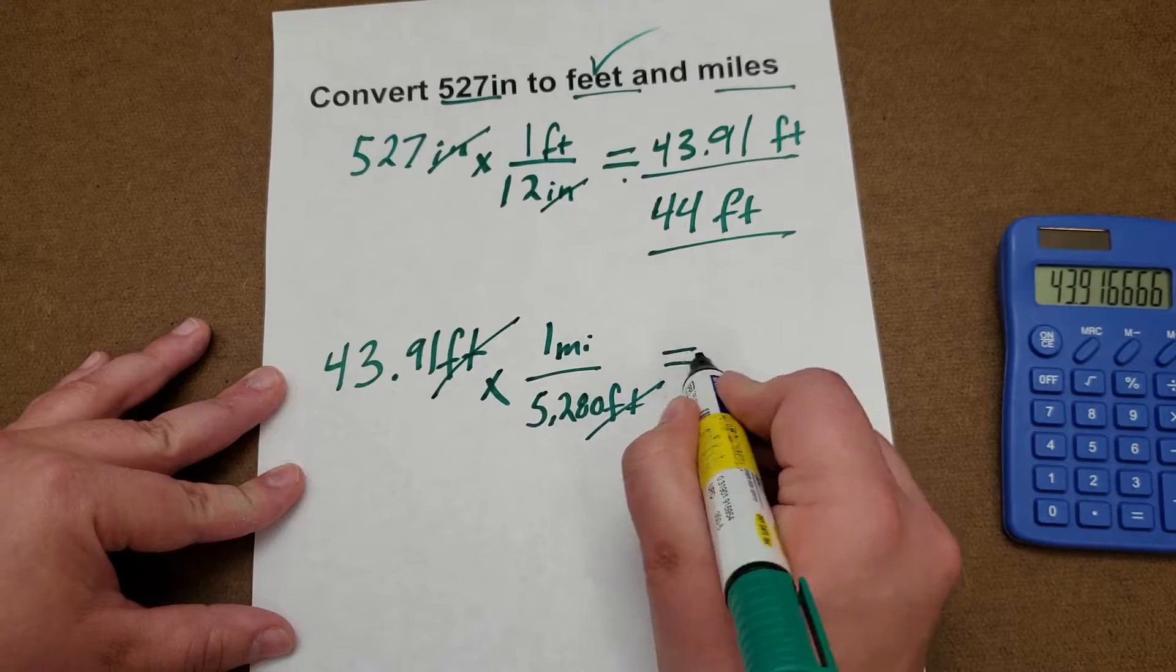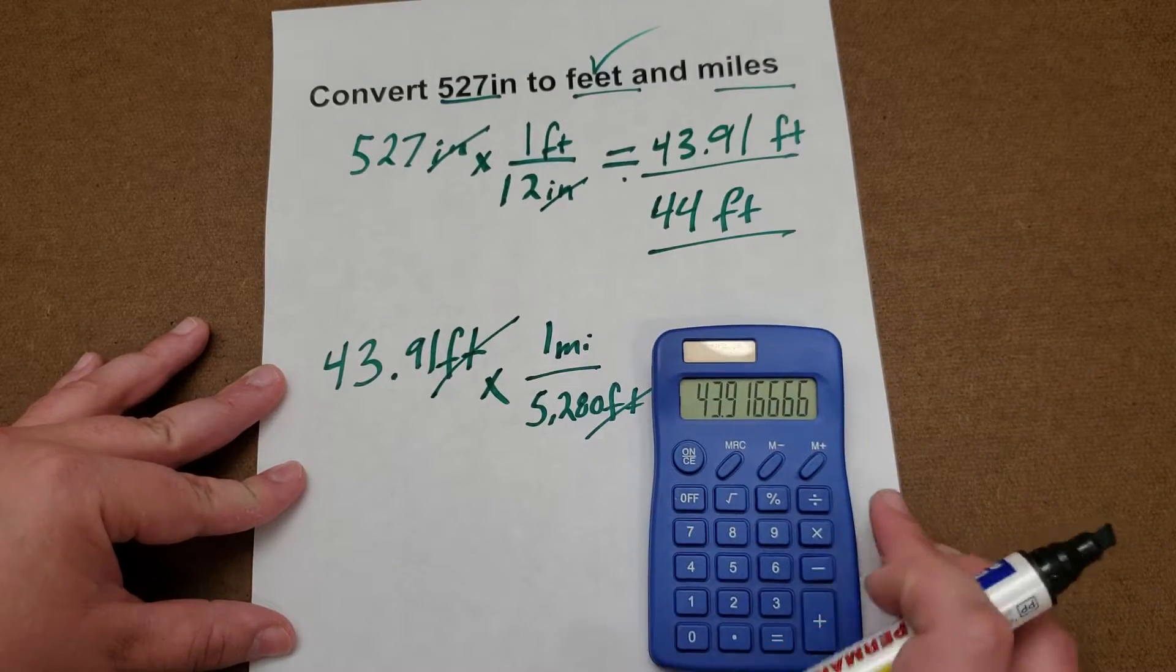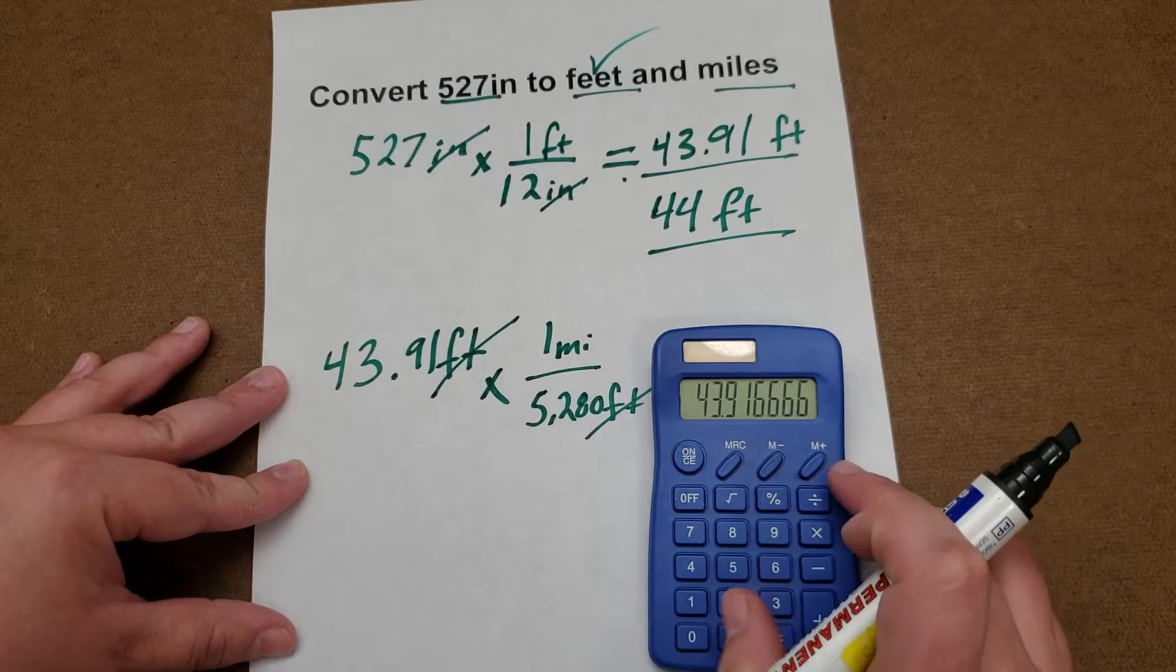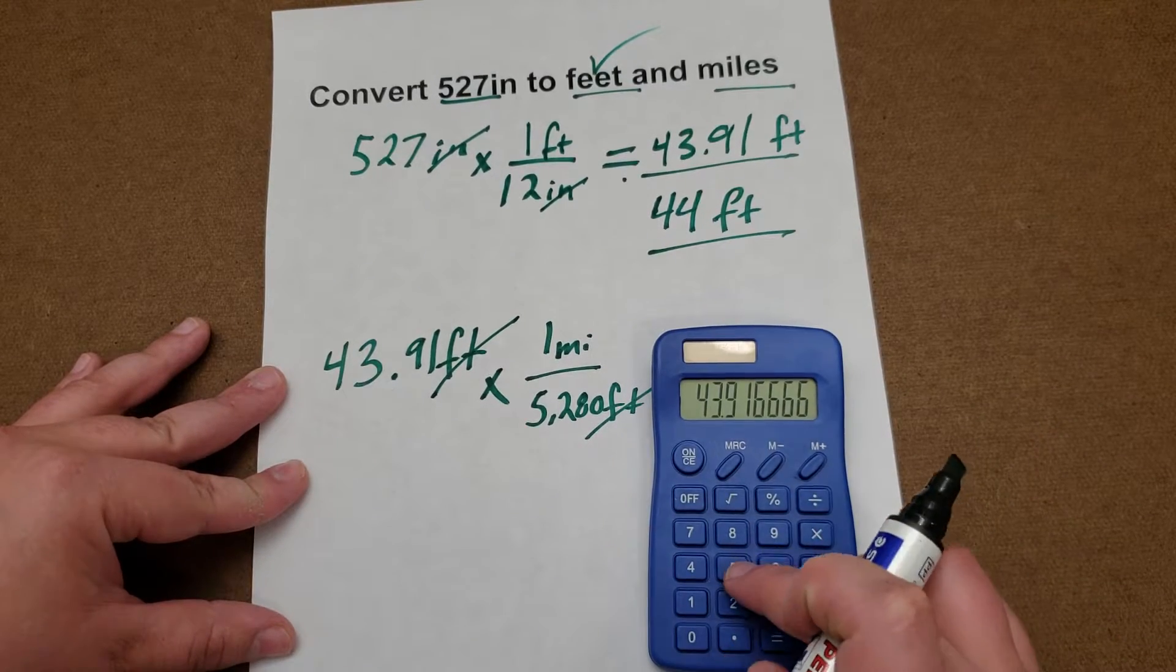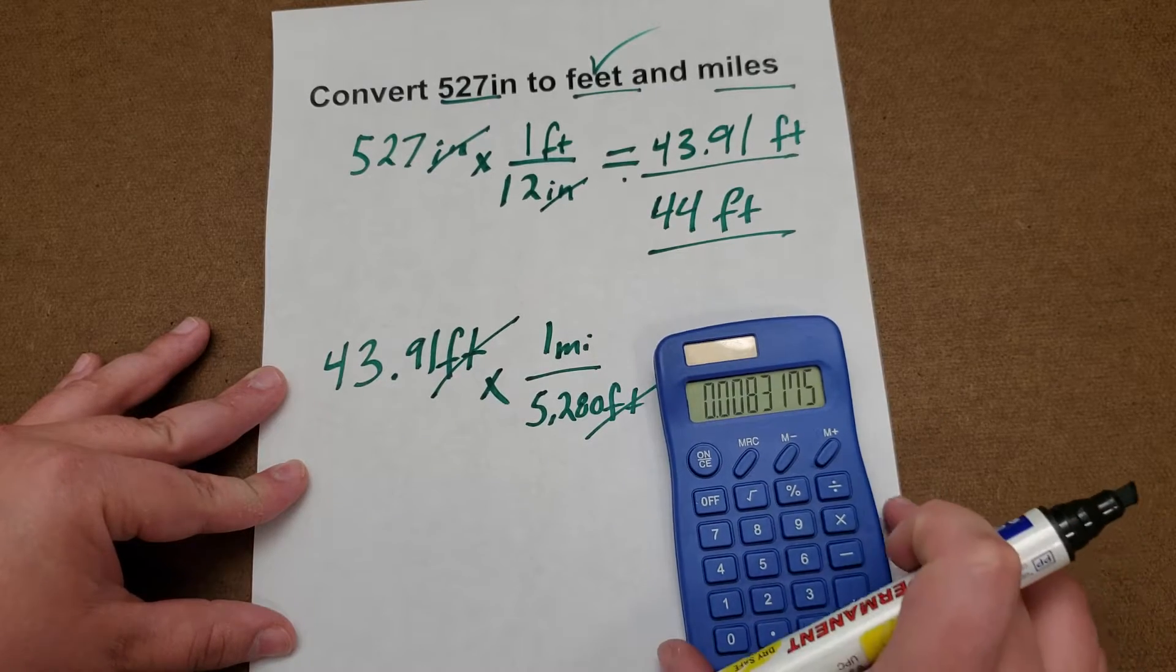So all we have to do is take that number and divide it by 5,280, and we get 0.0083 miles.